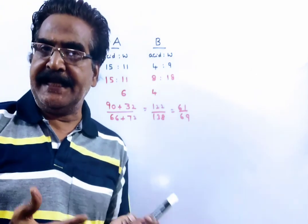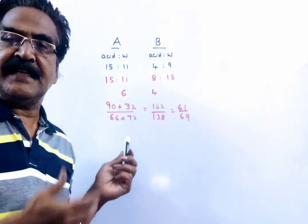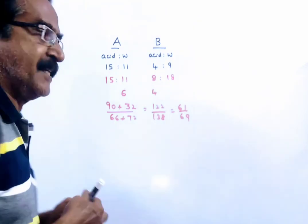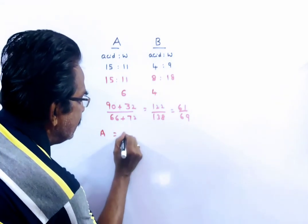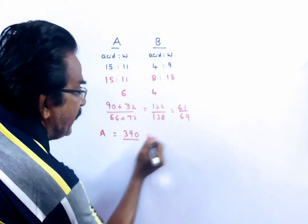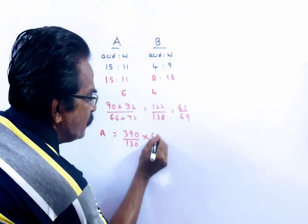Now we have taken 390 ml of resultant mixture. So let us find the acid and water in the resultant mixture. Acid, 390 by 61 to 69 means by 130 into 61. 183 is acid.